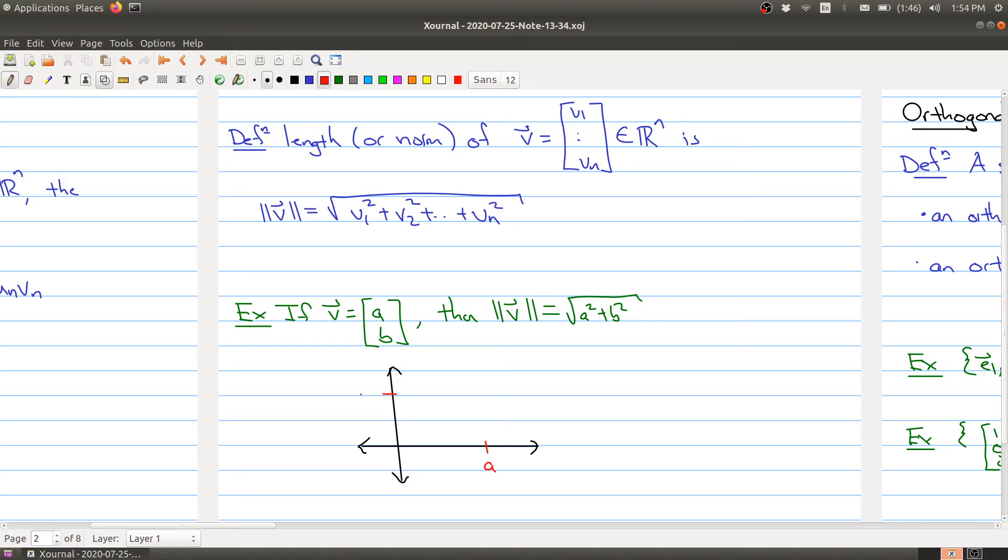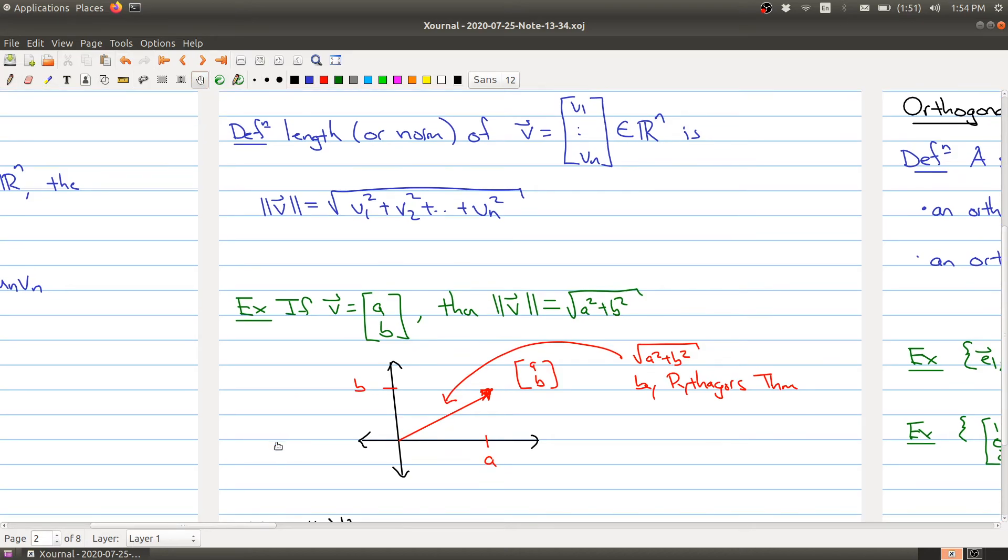If you think about it for a minute, you've seen something like this formula many times in your mathematical career. Let's say here is a and here is b, and you're looking at the vector right here, the vector (a, b). Then what is this value right here? Well, by the Pythagorean theorem, this has length square root of a squared plus b squared by the Pythagoras theorem. So what's happening in R^n is we're just generalizing this notion that we have in R² to R^n, to an arbitrary n-dimensional space.